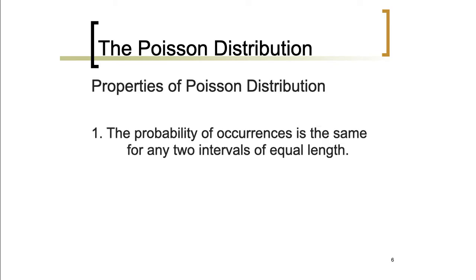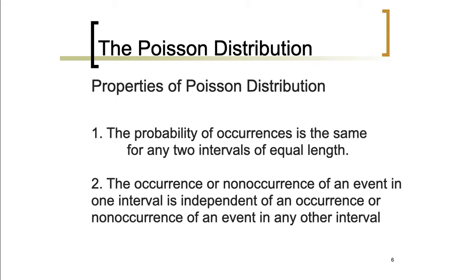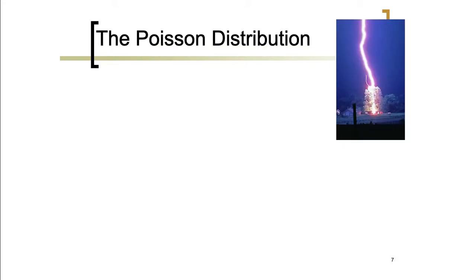There are two properties of a Poisson distribution. First, the probability of occurrences is the same for any two intervals of equal length. Second, the occurrence or non-occurrence of an event in one interval is independent of an occurrence or non-occurrence in any other interval. The interval or unit of measurement used in a specific problem will play a vital role, as we will observe in our examples.